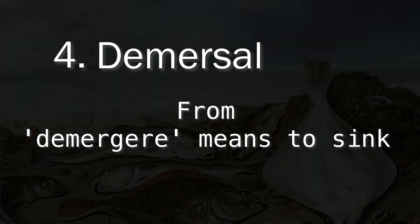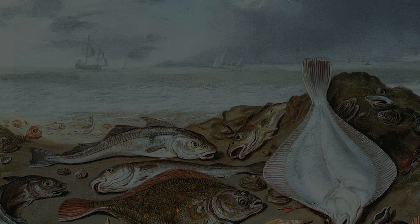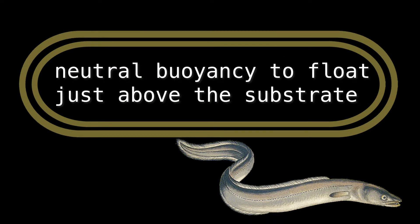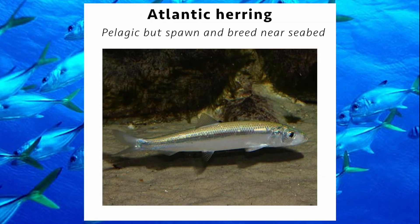The fourth terminology is demersal. The word demersal is derived from the Latin word 'demergere,' meaning 'to sink.' It refers to species living near the sea floor or lake beds. Fish within the demersal zone have a heavier weight than water, with neutral buoyancy to float just above the substrate. Demersal is the contrast to pelagic fish, who wander around the open ocean column.